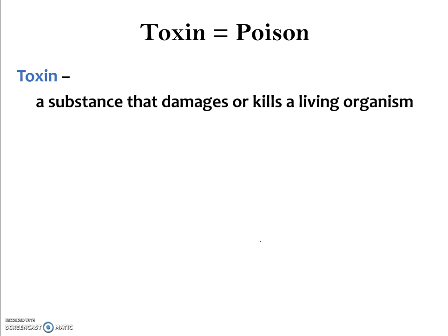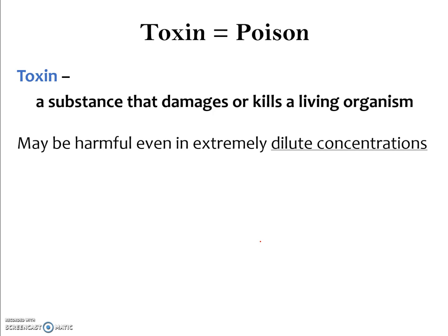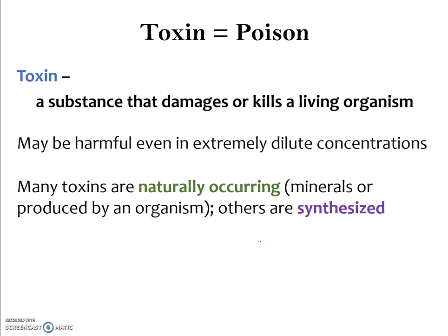Another cause of disease, other than pathogens, are toxins — essentially a synonym for poison. A toxin is any substance that damages or kills an organism, and toxins can be harmful even in very dilute concentrations. Some are naturally occurring, like minerals or compounds produced by organisms; others are synthesized — manufactured — by humans.